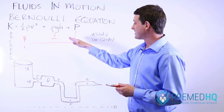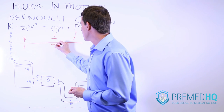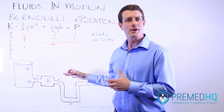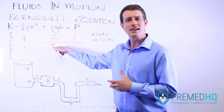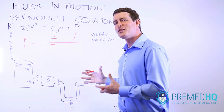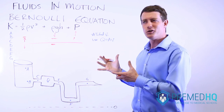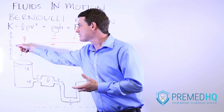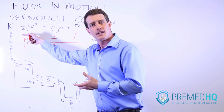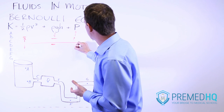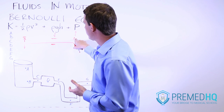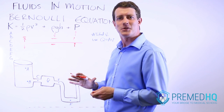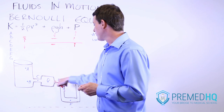From C to D, kinetic energy is going down and height remains constant, so pressure must increase to keep the sum equal to K at point D. Pressure increases from C to D simply because it has to.